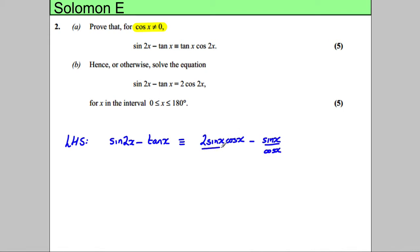These are basically fractions. I've tried to combine them. So, I'll multiply the top and bottom of this by cosine x. So, this would be 2 sine x cos squared x over cos x subtract sine x over cos x. And now I could combine these.